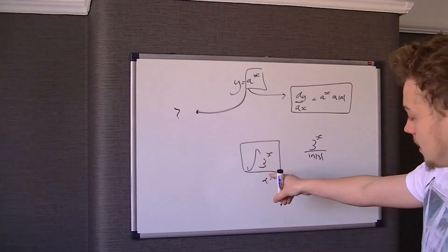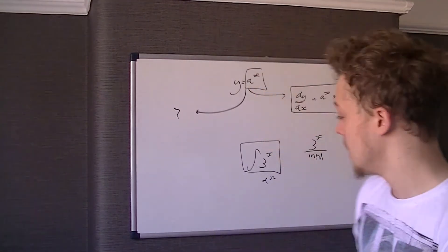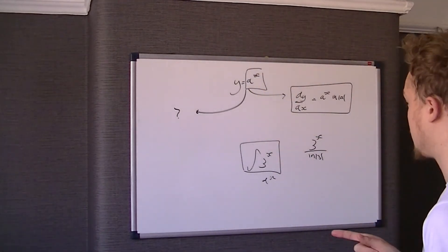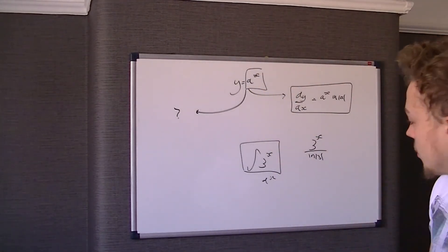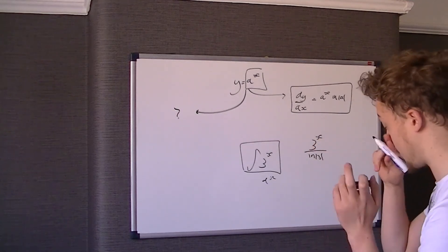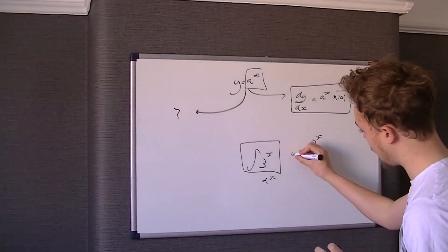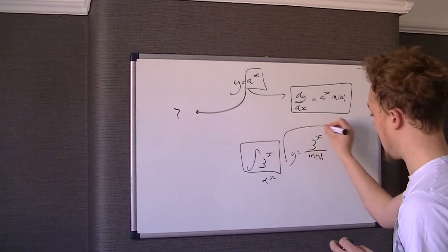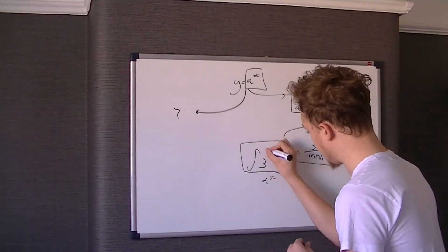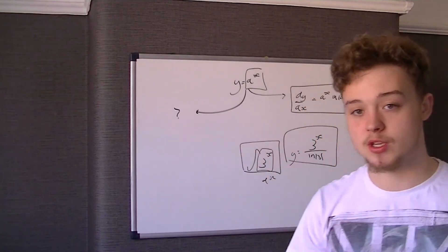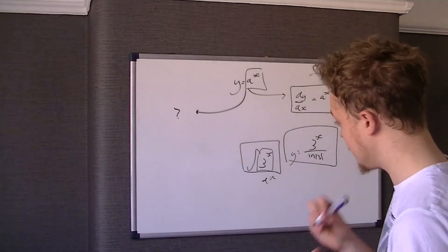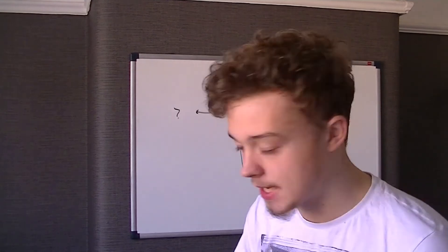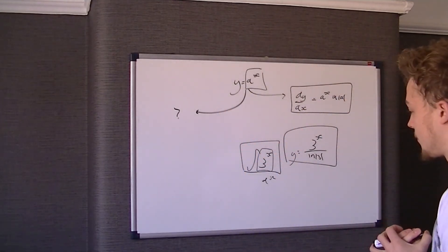So if you imagine this 3 to the x is dy/dx, to find out what y is you could go back and work it out as a differential equation, but you'd just be working this anyway. So if y equals 3 to the x over ln 3 and we differentiated that, then we would get 3 to the x. And because differentiation is the opposite of integration, when we integrate 3 to the x we get 3 to the x over ln 3.